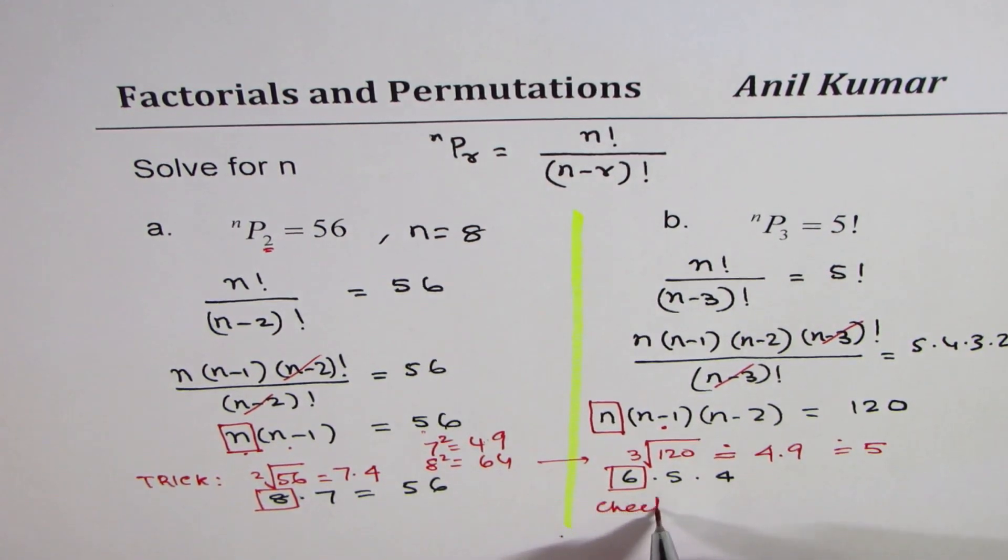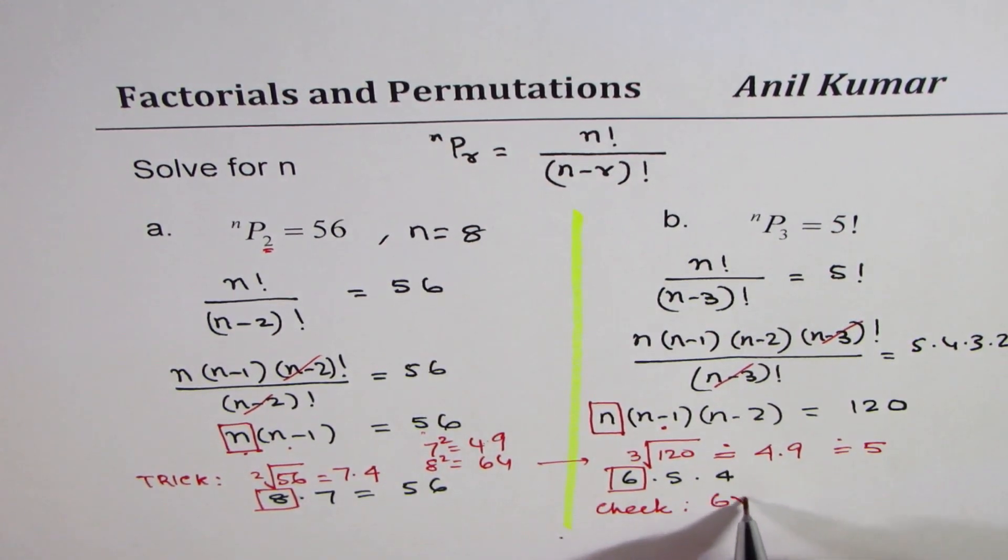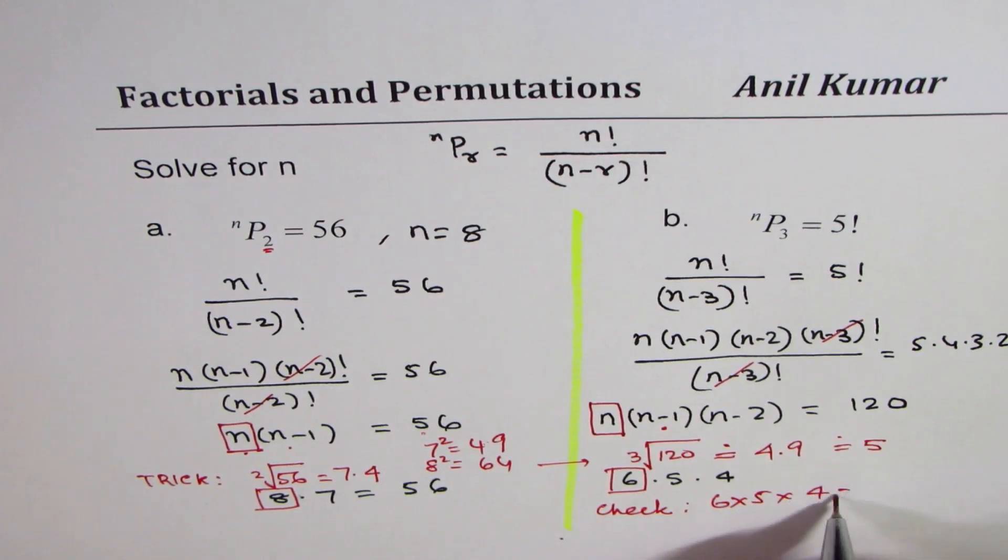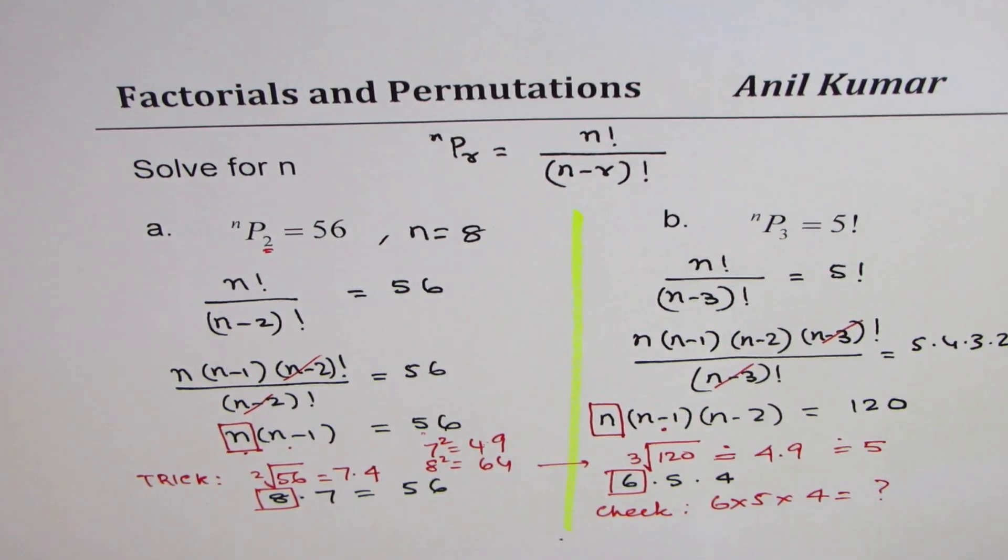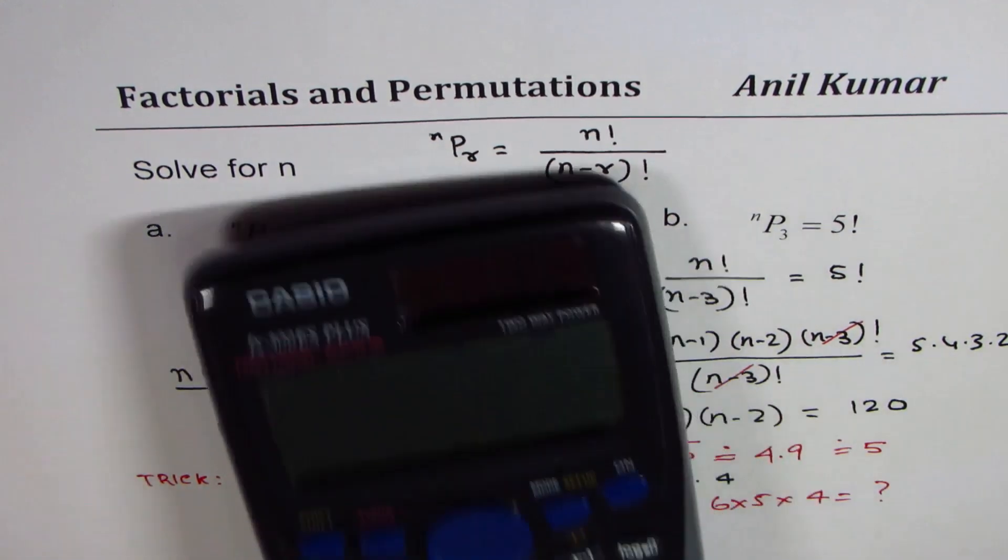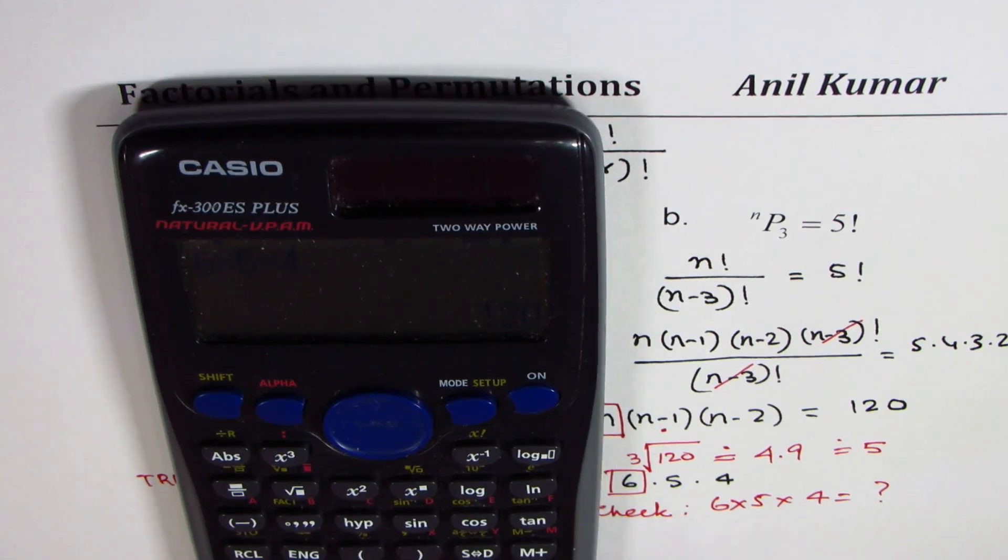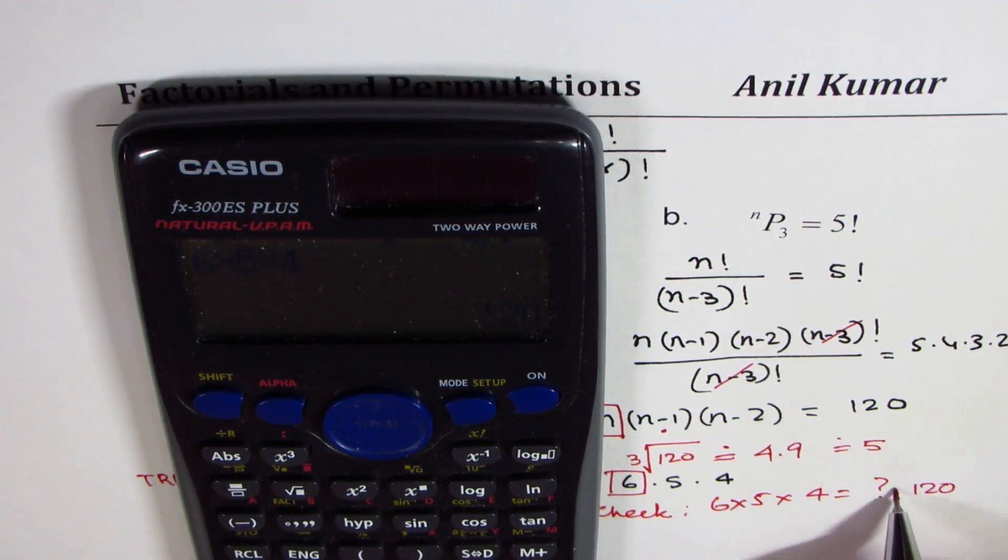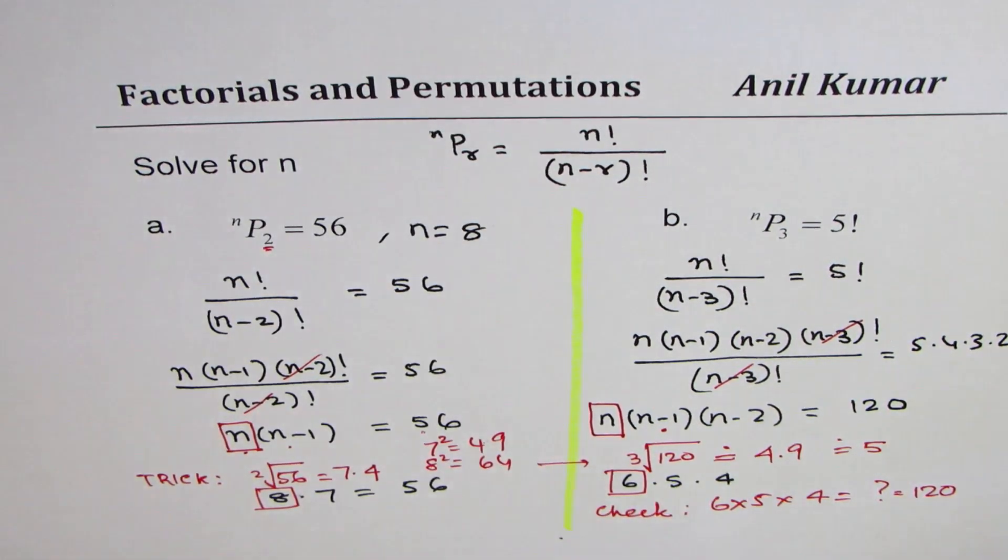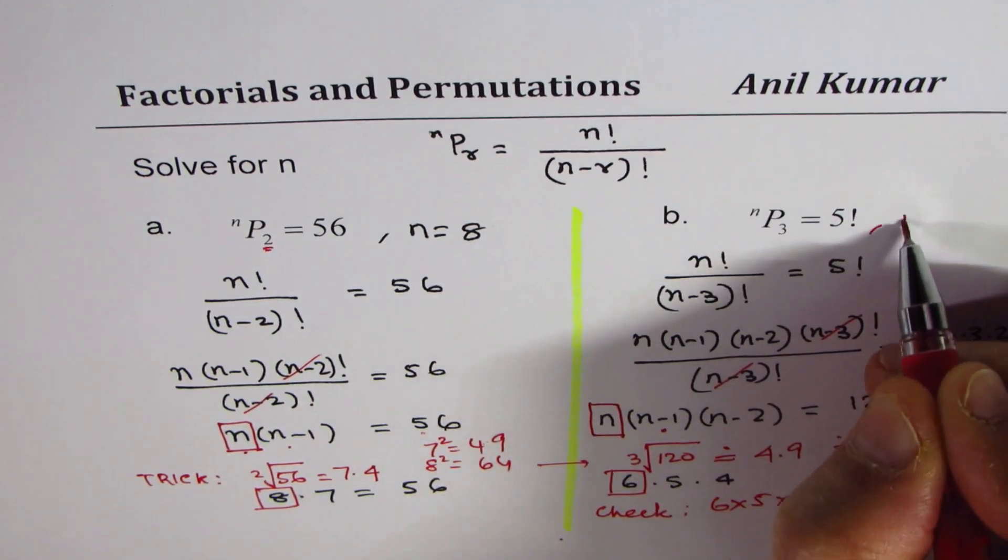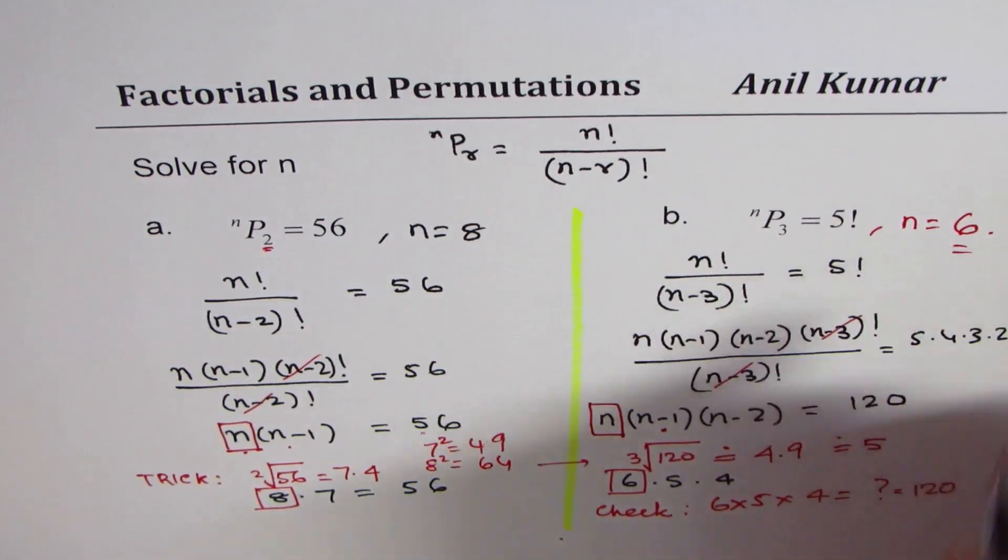And what you can do is perform a check. So what is the check? 6 times 5 times 4 equals to what? You get the same answer: 120. And therefore we can say n is equals to 6. Do you see that?